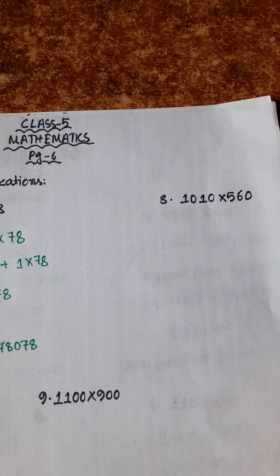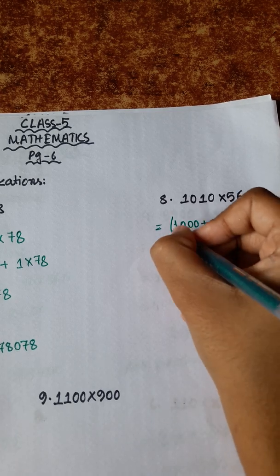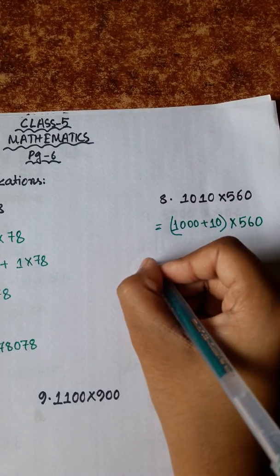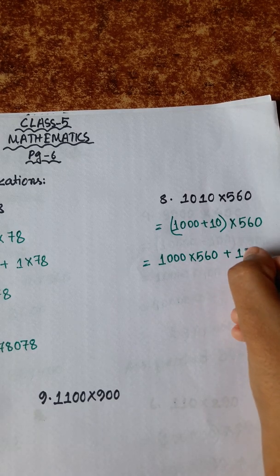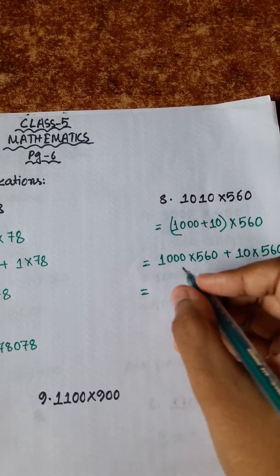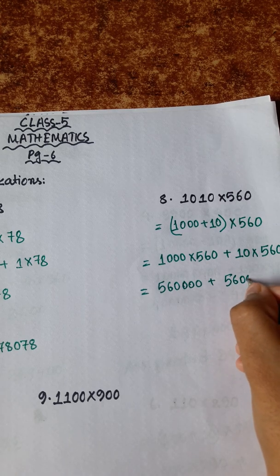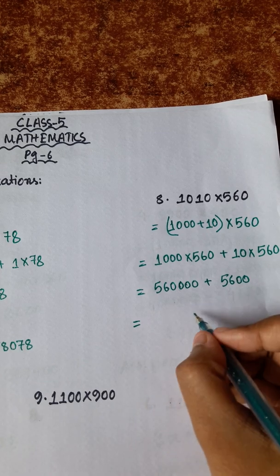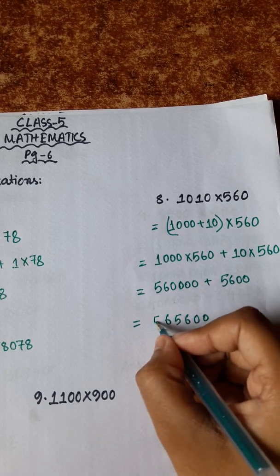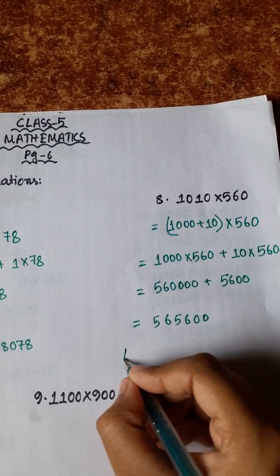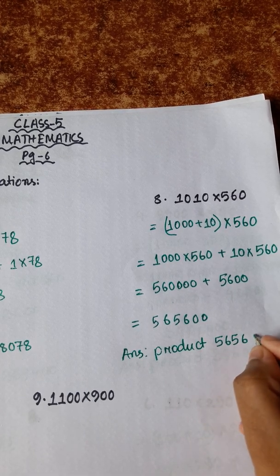Account number 8: 1,010 into 560. We split 1,010 as 1,000 plus 10. So, 1,000 into 560 plus 10 into 560 equals 560,000 plus 5,600, which equals 565,600. Answer product: 565,600.